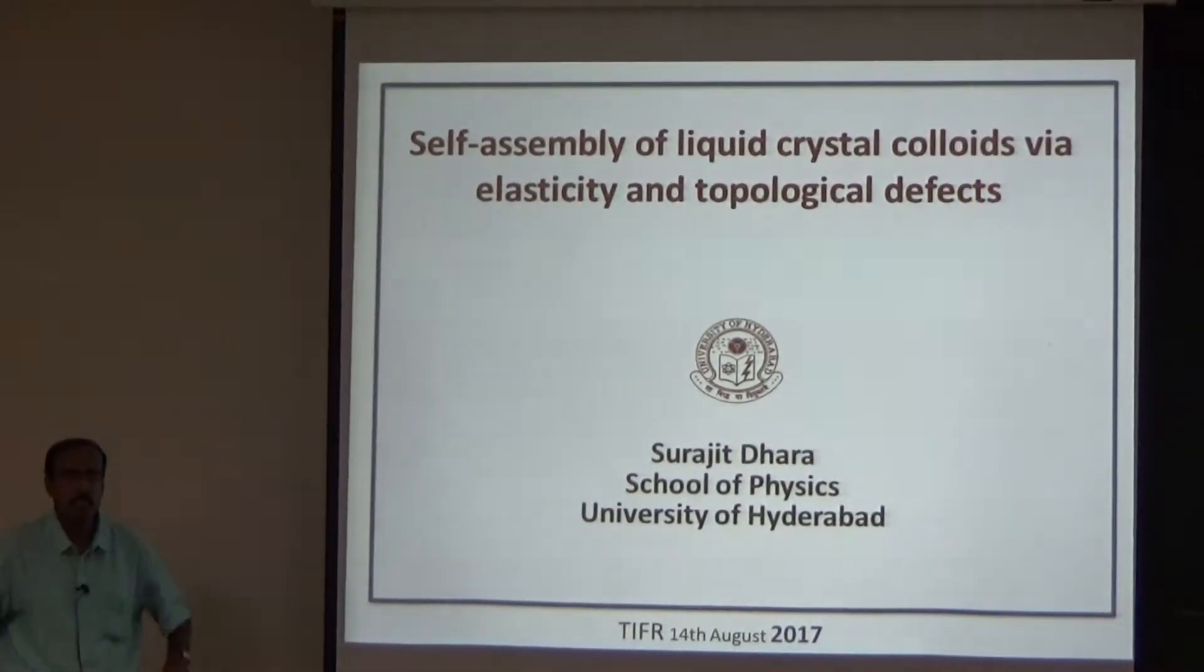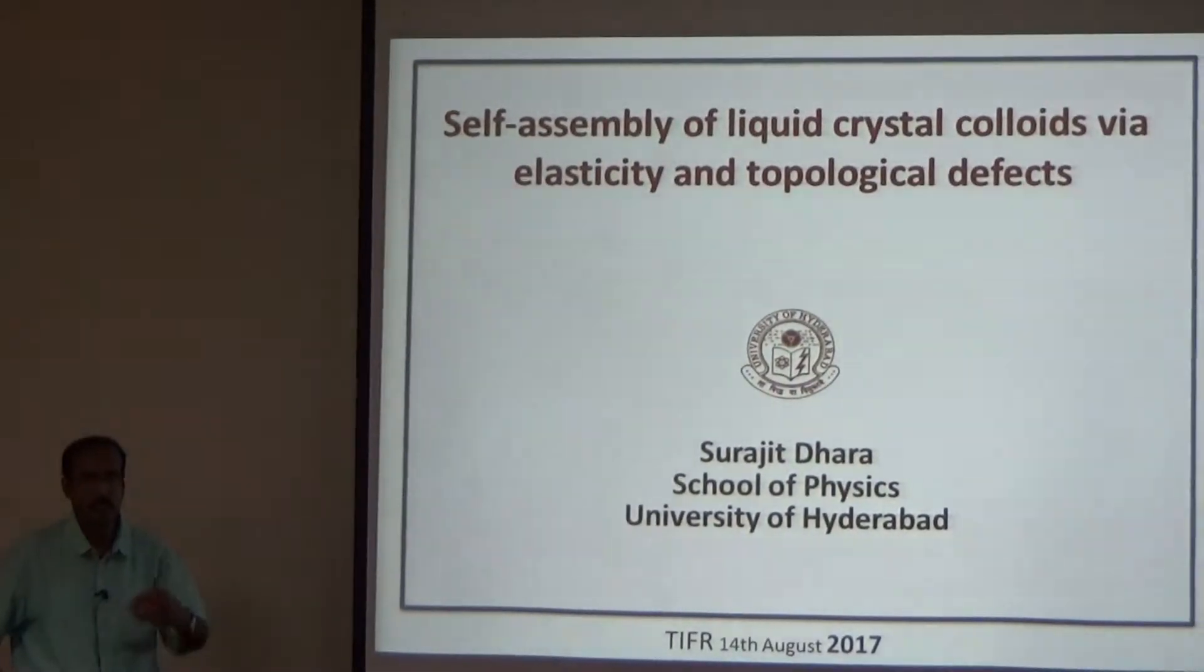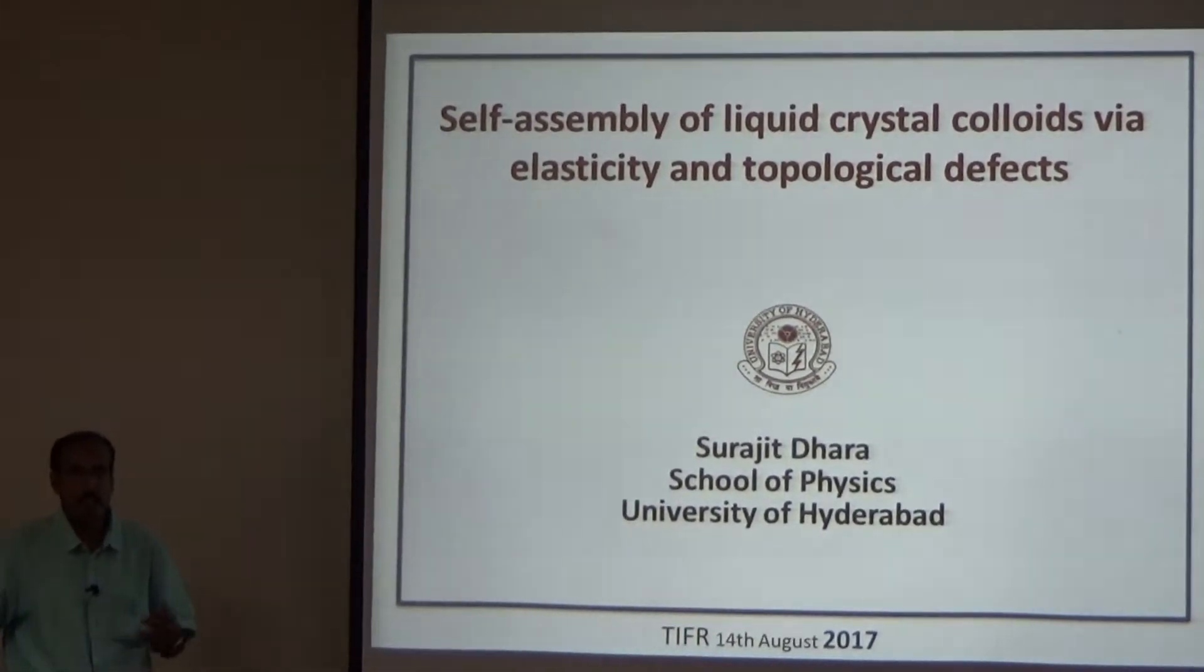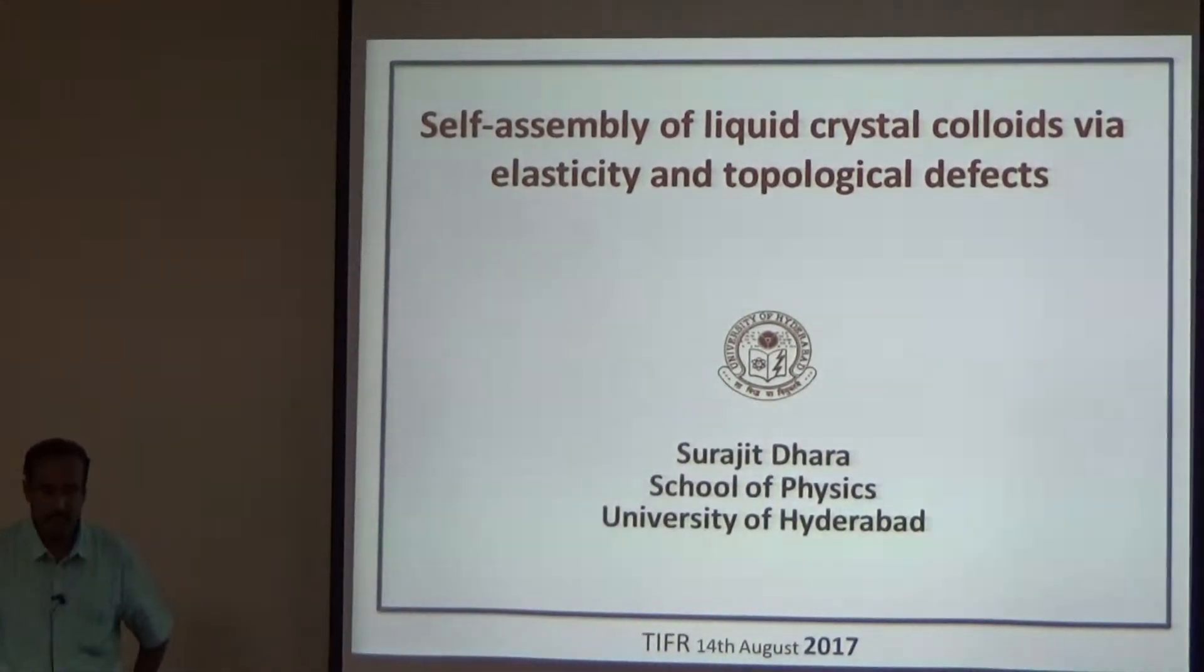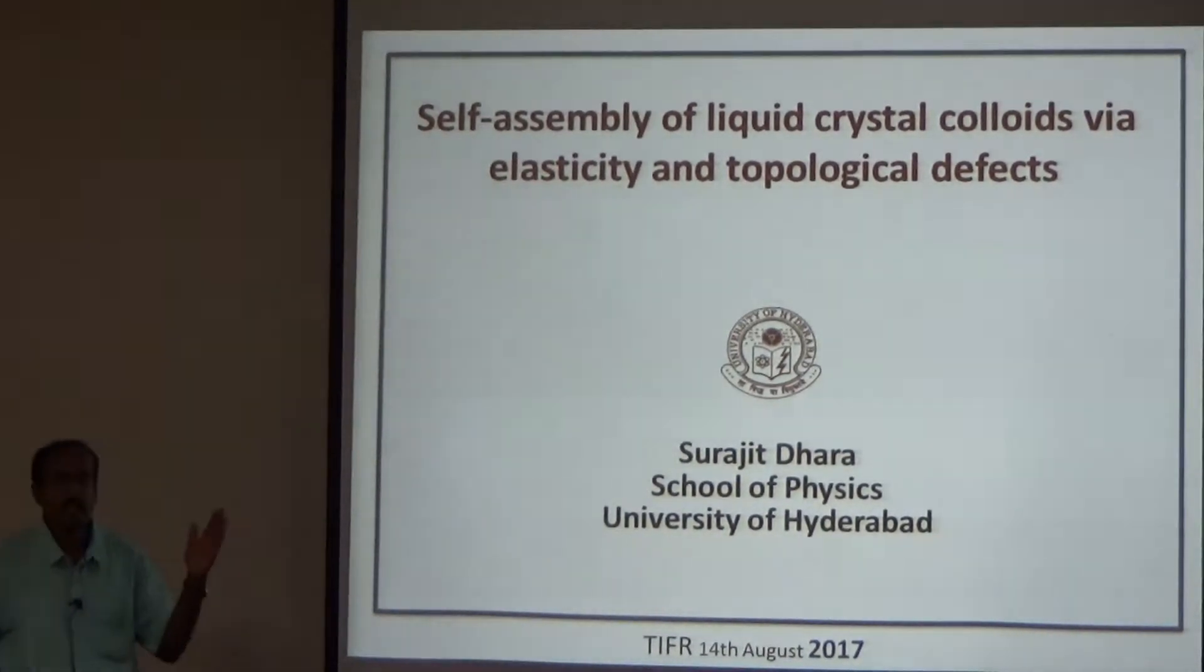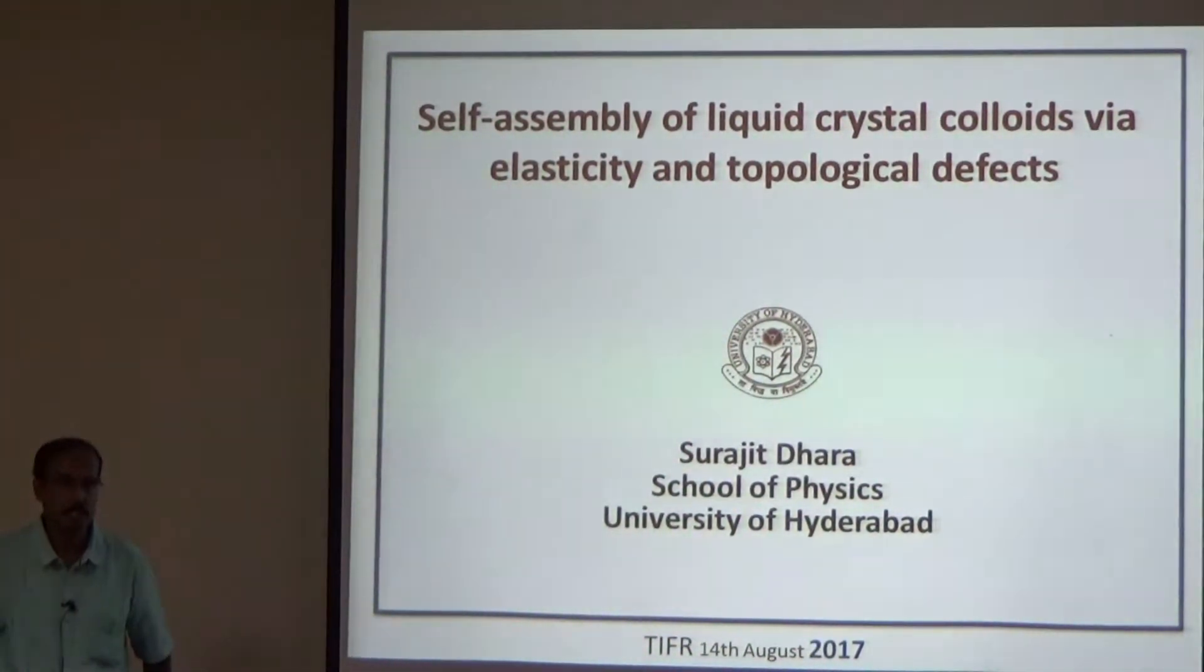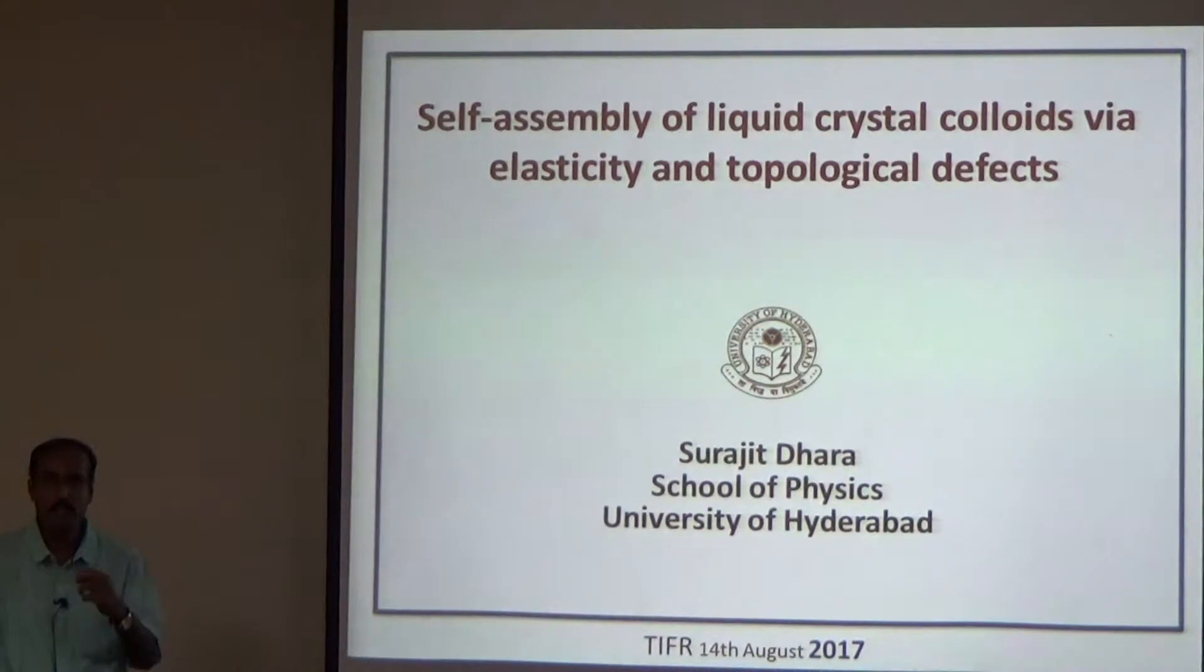As you know, topological defects are studied in various branches of physics, starting from cosmology to condensed matter, optics and even in active matter. In cosmology, it is believed that after the Big Bang, when the universe was cooling very rapidly, it was going through several symmetry-breaking phase transitions and cosmic strings were created. Those are topological defects. Today's large-scale structure of this universe is believed to be due to the formation of these cosmic strings.